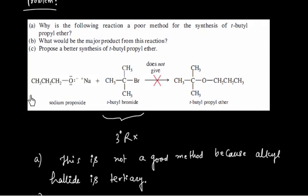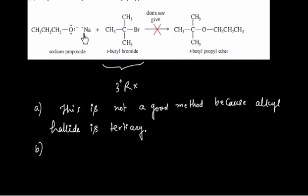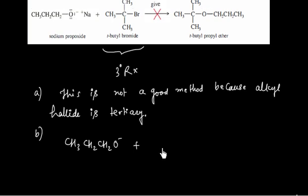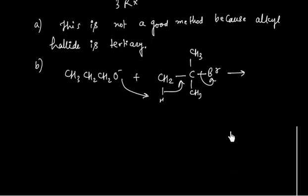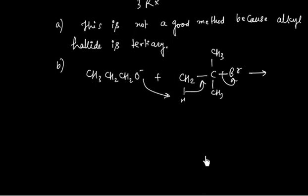Now let us discuss part B: what would be the major product from this reaction? In this case we will have mainly elimination. CH₃CH₂CH₂O⁻ will act as a base and pull a beta proton from the tert-butyl bromide; Cl⁻ leaves simultaneously. So we will have CH₂=C(CH₃)₂ as the major elimination product.